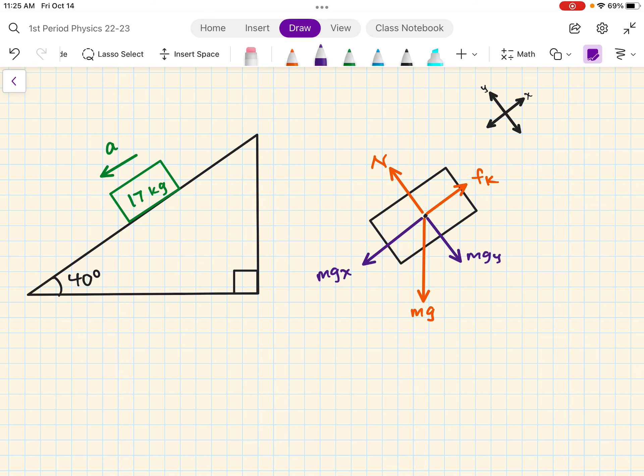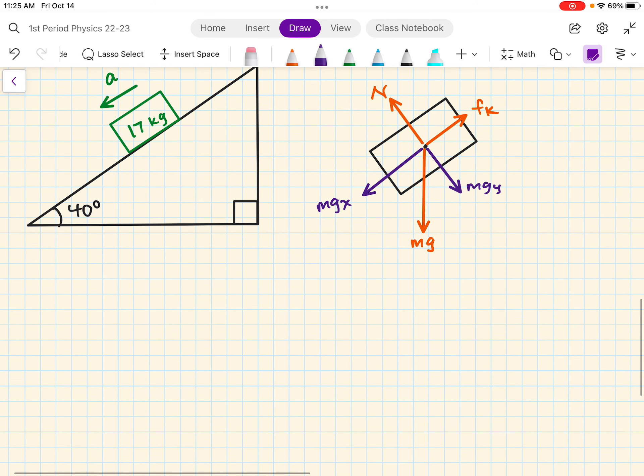And this is mgy. Okay. Now we can sum the forces. Let's start with the y-axis. So we have the sum of the forces acting along the y. Still, normal will be the positive force. And then mgy will be the negative force. That's equal to zero. There's no acceleration along the y-direction.